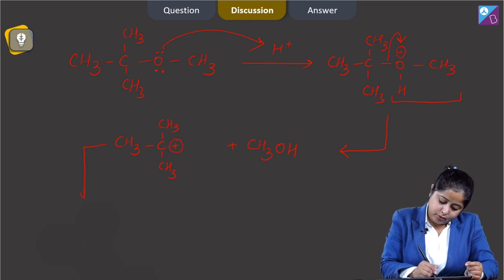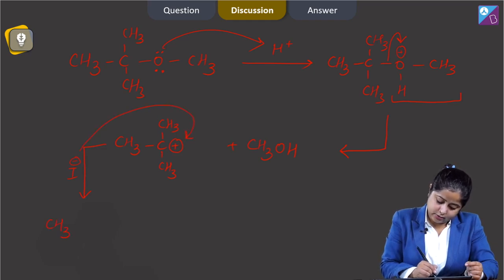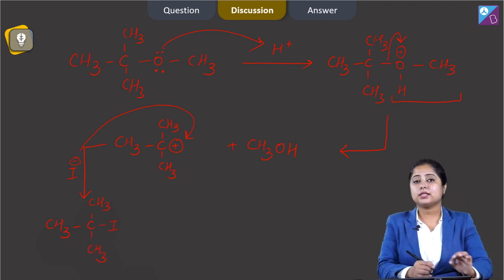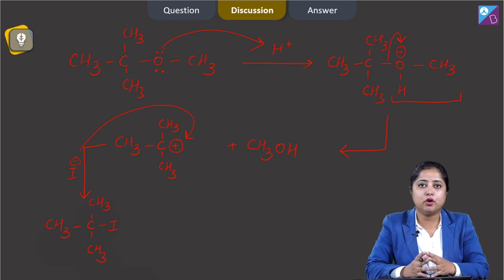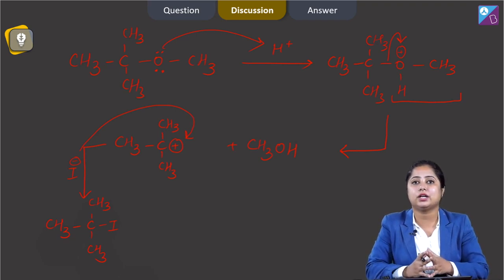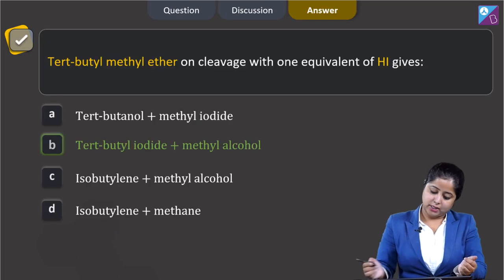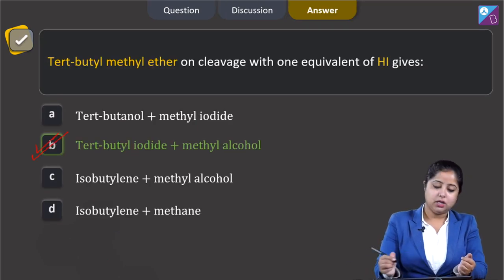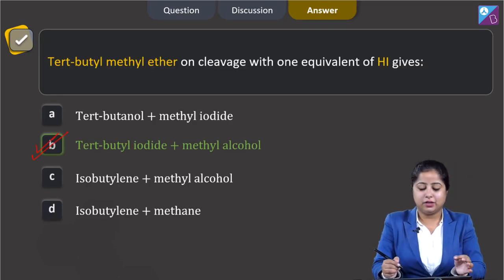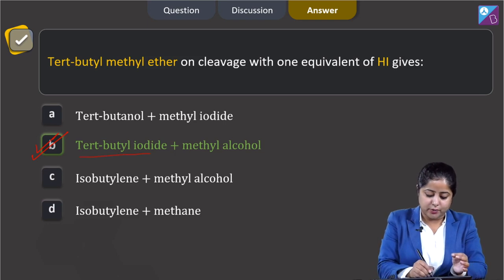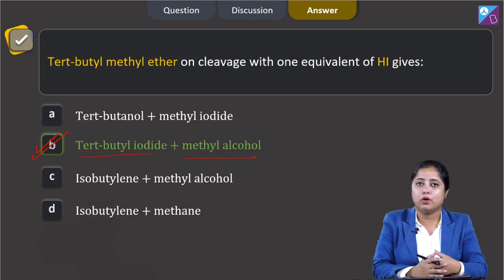I⁻ will attack on this carbocation, and as a result tert-butyl iodide will be formed. Since carbocation is the intermediate, this reaction follows SN1 mechanism. The correct answer is option B: tert-butyl iodide and methyl alcohol.